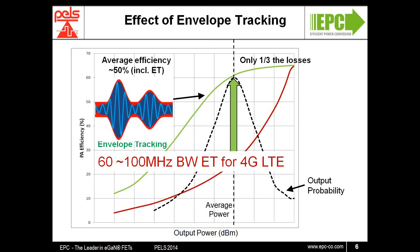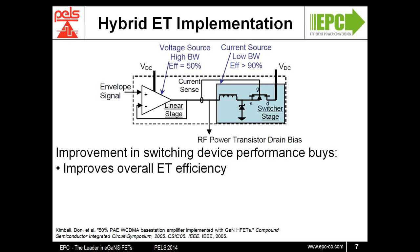So how is this implemented? Currently, there is no single switching solution that can achieve both the efficiency and the bandwidth required. So most systems end up being hybrid — a switching stage that has high efficiency and generates most of the power at lower bandwidth, supplemented by a linear stage that has low efficiency but high bandwidth to generate the overall bandwidth required. If you are able to improve the performance of the switching device, you can improve the overall efficiency of the envelope tracking power stage and push the frequency and bandwidth of the switching stage higher.